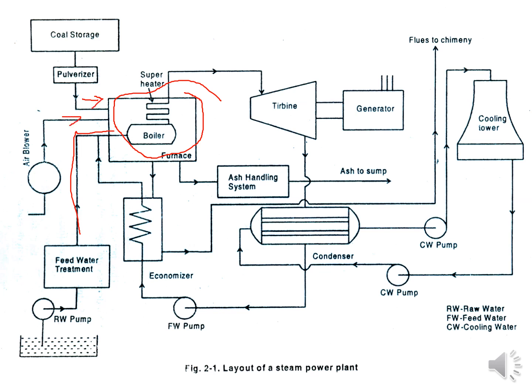Coal is pulverized and fed into the boiler. Air and coal enter and combust to produce steam. The steam is the input for the turbine. The output is wet steam going to the condenser. The turbine rotates and is coupled with the generator to generate electricity, which is then transmitted further through transmission lines.